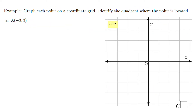In this example, I'm going to show you how to plot points. Starting with point A: negative three and three. From the origin, I'm going to move three left and three up. This is point A, and it is in quadrant two.